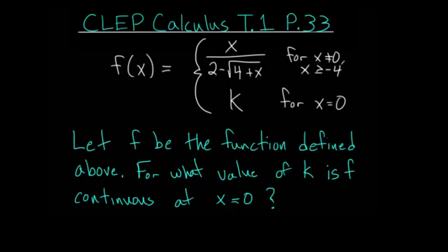For problem 33, let f be the function defined above such that f of x is this piecewise function: for x nonzero and x greater than or equal to negative 4, f of x equals the equation up top, and when x equals 0, f of x equals the value k. For what value of k is f continuous at x equals 0?